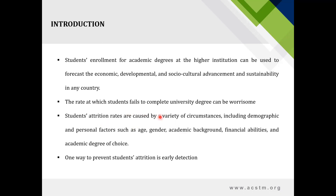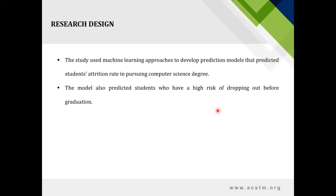Students' attrition rates are caused by a variety of circumstances. This includes demographic and personal factors such as age, gender, academic background, financial abilities, and academic degree of choice. These are some of the factors that could cause attrition in students pursuing a particular course — in our case, students pursuing a computer science degree.